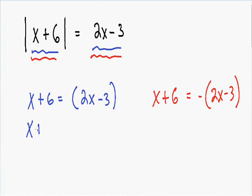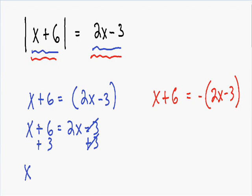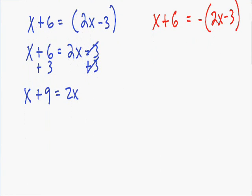In blue we have x plus 6 is equal to 2x minus 3. To get x by itself, I'll add 3 to both sides. The negative 3 and positive 3 on the right cancel out, leaving 2x, and on the left we have x plus 9. Now I subtract x from both sides: the positive x and negative x cancel out, leaving positive 9, and on the right 2x minus x equals x. So x is equal to 9. That is one of our solutions.